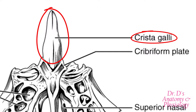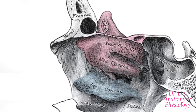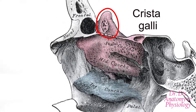Finally, we have our crista galli, and you can appreciate better in this figure how tall, slender, and sharp it is. Here is another view of the medial wall of the lateral masses, where we can see the superior nasal concha and the middle nasal concha from a better perspective. You can also see the profile of the crista galli more easily in this sagittal view, and see how it extends above the cribriform plate.